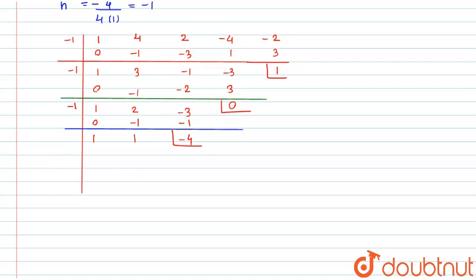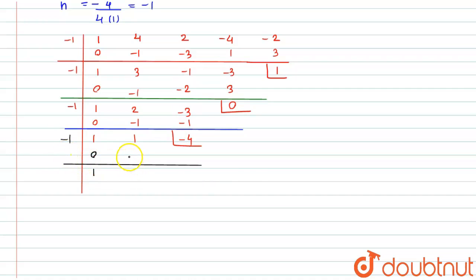Again applying the same method with factor −1: bring down 1; 1 × (−1) = −1, and 1 + (−1) = 0. Finally, we are left with only one term, which gives us a₀.